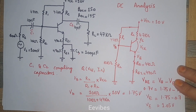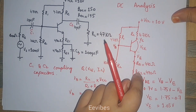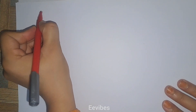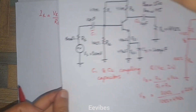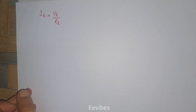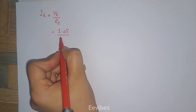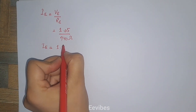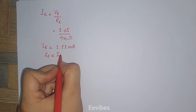Now that we have the emitter voltage, and the emitter resistance is also present, we can determine the emitter current. IE equals VE over the emitter resistance RE. There are two resistors in series at the emitter terminal, so we add them to get total RE. Substituting: 1.05 divided by 940 ohms gives IE equal to 1.11 milliamperes.